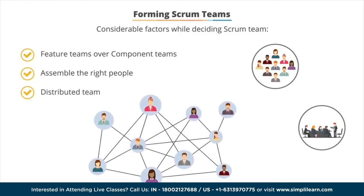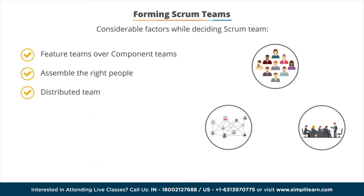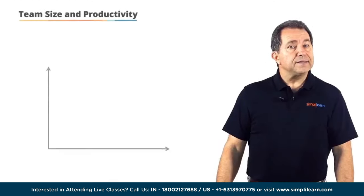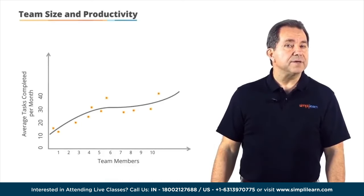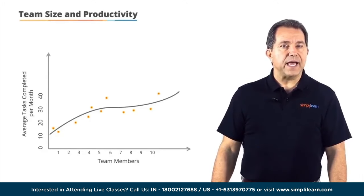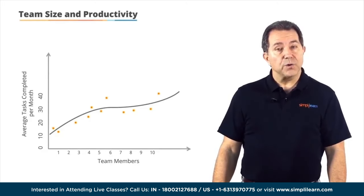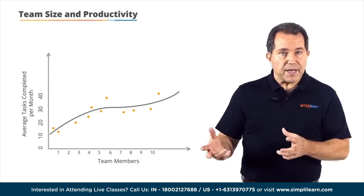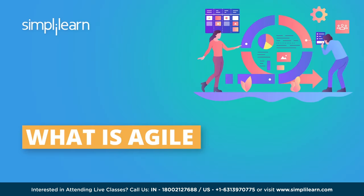Plotting team size and productivity will likely result in an S-curve — a team can be too small or too large. Remember the sweet spot is six plus or minus three.